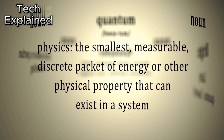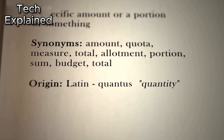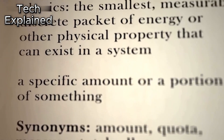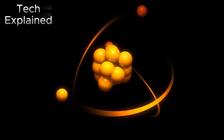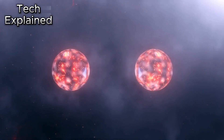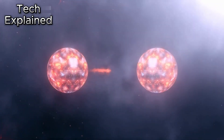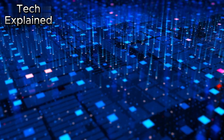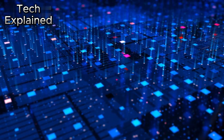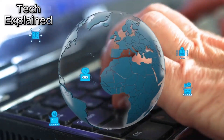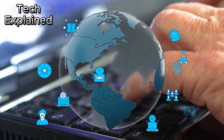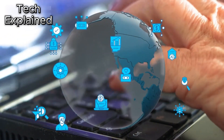Understanding the Principles of Quantum Mechanics. Understanding the principles of quantum mechanics is crucial in unraveling the potential of quantum computing in technology. Quantum mechanics is a branch of physics that deals with the behavior of particles at the atomic and subatomic levels, introducing a whole new set of principles and concepts that differ from classical physics. One of the fundamental principles of quantum mechanics is superposition. Unlike classical bits that can only be in a state of zero or one, quantum bits, or qubits, can exist in a superposition of both states simultaneously, opening up a realm of possibilities for computations.